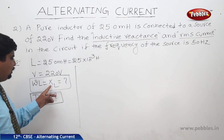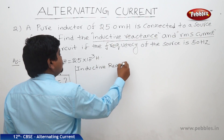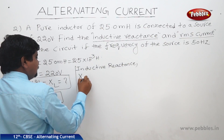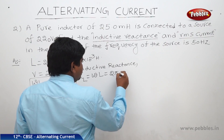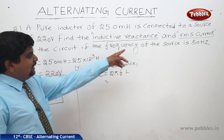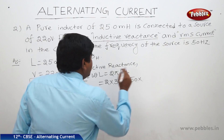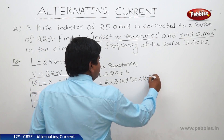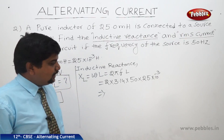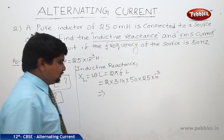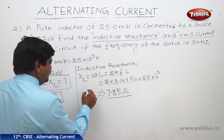To find the inductive reactance: XL = ωL, where ω = 2πf. The frequency is 50 Hz, so substituting: XL = 2 × 3.14 × 50 × 25 × 10⁻³. That gives 2 × 50 = 100; 100 × 25 = 2500; 2500 × 3.14 / 1000 = 7.85 ohms. This is the inductive reactance.